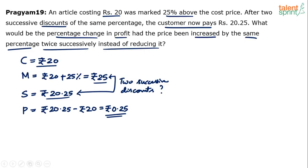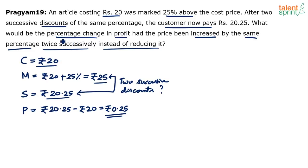Once you get that percentage, you apply the reverse. Here the price is being reduced twice. Instead of reducing it twice, increase it twice. So 25 minus X% minus X% gives 20.25 in the original case. In the new case, 25 plus X% plus X% gives the new selling price. From there, find the new profit and calculate the percentage change.